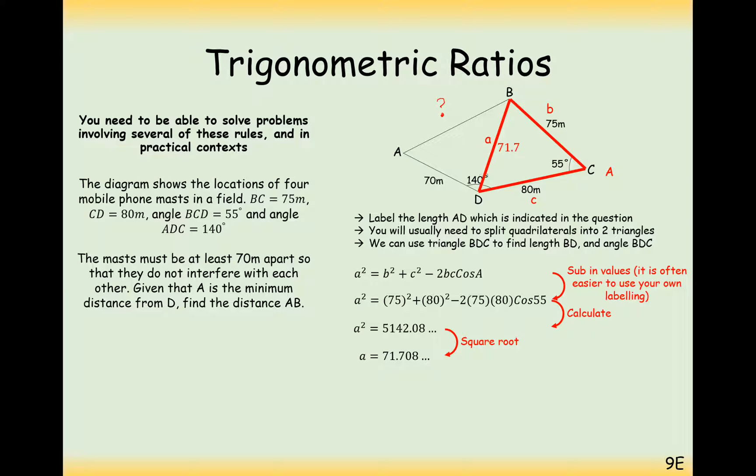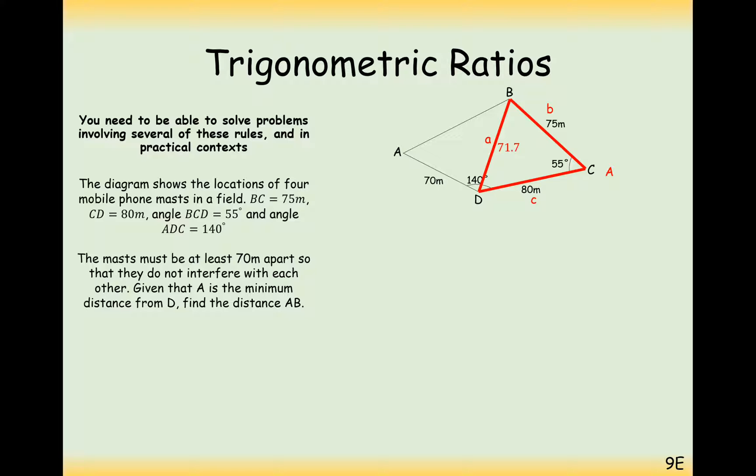Probably best to use the longer version when we carry on this question with other values. So what we're going to have a look at now is we've got this side here, we've got this side here. Now it'd be great if we knew what this angle here was. Now it's not just going to be the 140 angle split in two. So what we might have to do first is work out what this angle here is and then do 140 take away it to get the angle that we're really looking for. So the next thing we need to do here is to use the sine rule here and pair up the 71.7 and the 55 degrees.